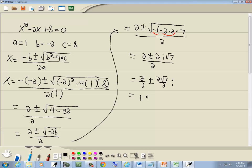Well, 2 divided by 2 is 1. Plus or minus, those 2's cancel and I've got square root of 7i. And that would be our answer, 1 plus or minus square root of 7i.